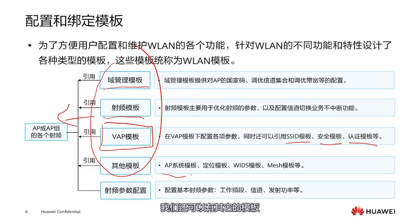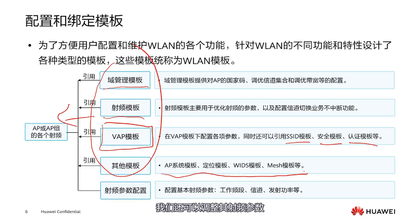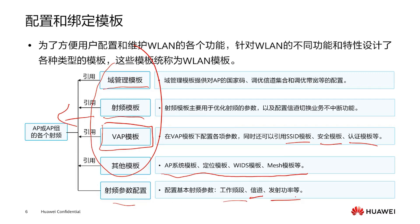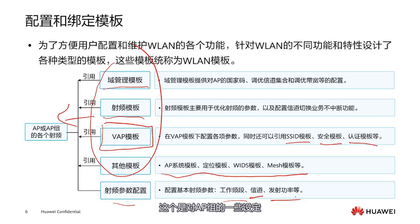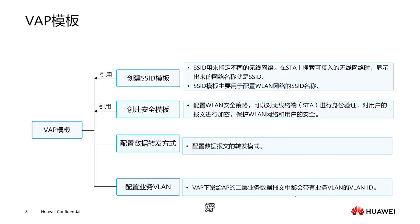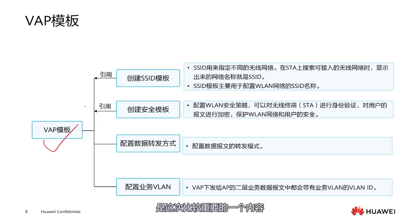If we have further advanced needs, we can also use other templates — each template corresponds to different functions. For APs and AP groups, we can also adjust their radio frequency parameters such as frequency bands, channels, and transmission power, all of which can be modified. If our working frequency bands are insufficient, we can also bundle two frequency bands together. These are some of the settings for AP groups which can utilize templates.